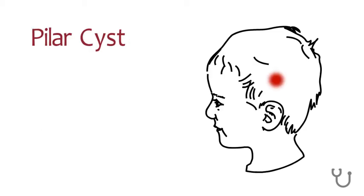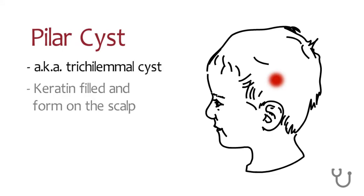Pilar cysts, also known as trichilemmal cysts, are keratin-filled cysts that usually form on the scalp. The condition of having pilar cysts can be genetic, with an autosomal dominant pattern of inheritance.